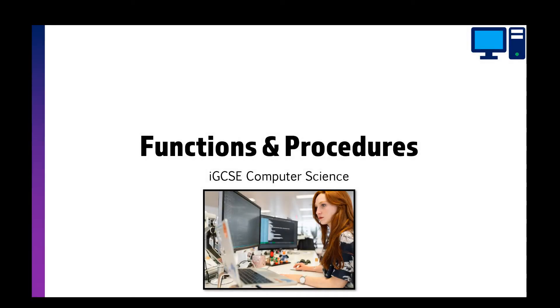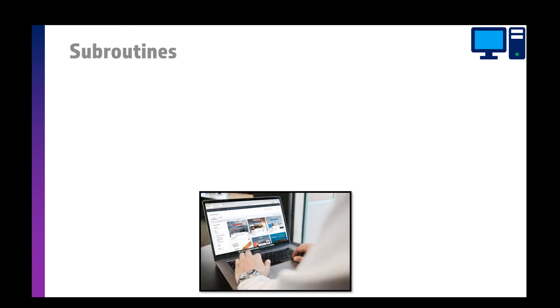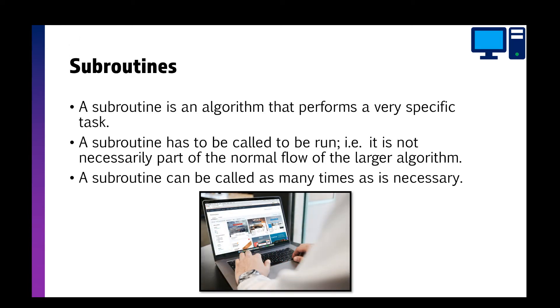In this video we're going to take a look at functions and procedures for IGCSE computer science. So first things first, subroutines. A subroutine is an algorithm that performs a very specific task. A subroutine has to be called to be run, so it's not necessarily part of the normal flow of a larger program, and you can use a subroutine as many times as necessary.